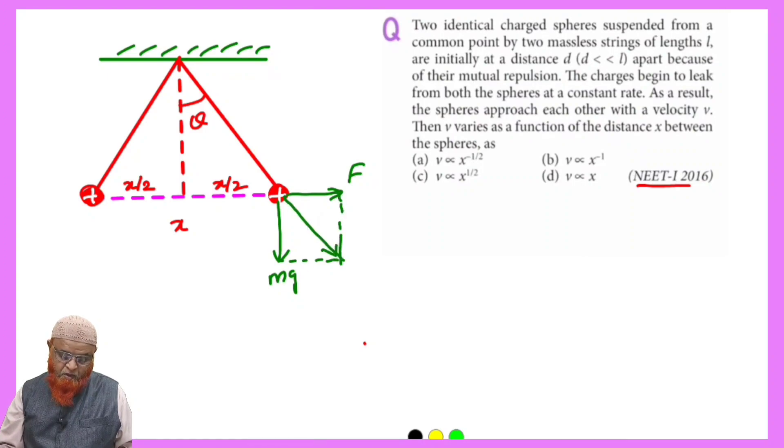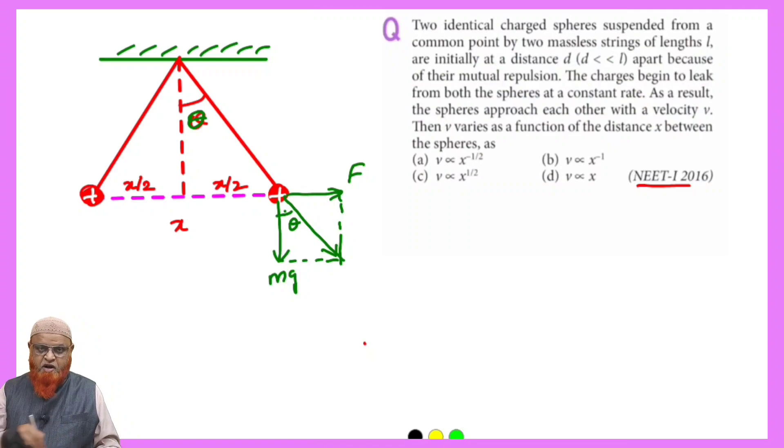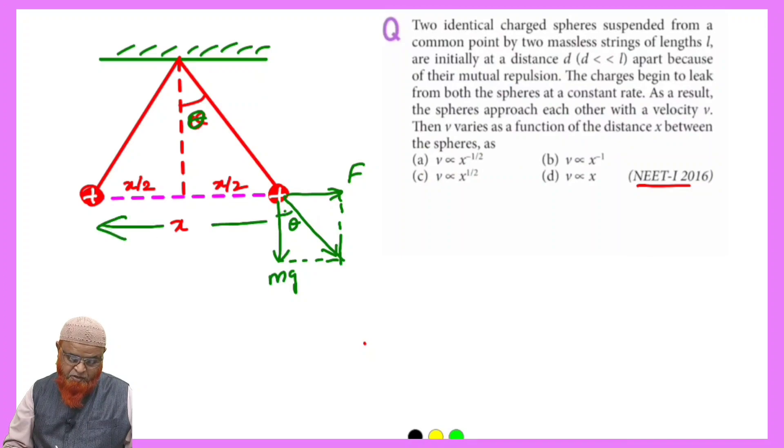This angle is theta, this angle also theta, corresponding angles. Then after that, you all know that this is the distance between the two positive charges which are hanging, taken as x.